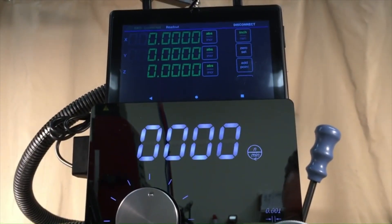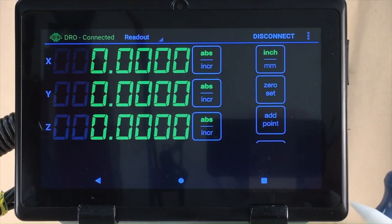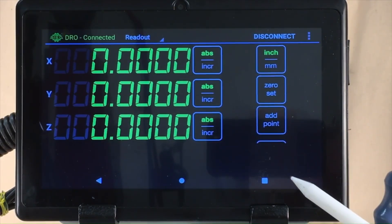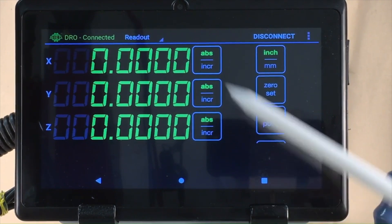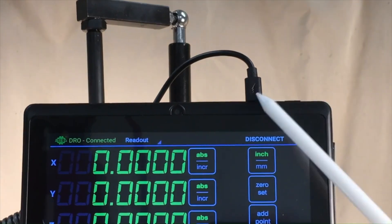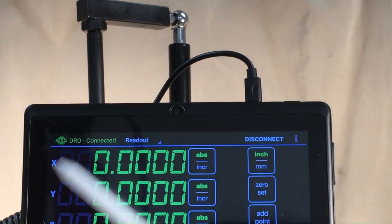The display is actually a standard Google Chrome tablet device, but it is included with the model 6450 mill. There's a three-axis display: X, Y, and Z. There's a USB cable that plugs in up here and is powered by the mill itself.